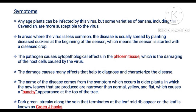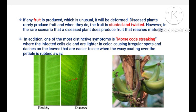The name of the disease comes from the symptoms which occur in older plants, where new leaves are produced narrower than normal. They become yellow and flat, which causes a bunchy appearance at the top of the tree. Dark green streaks along the veins that terminate at the leaf midrib appear on the leaf, known as green jay streaks. Fruit is produced which is unusual — it will be deformed, stunted, and twisted. Diseased plants rarely produce fruit.